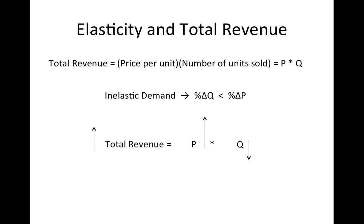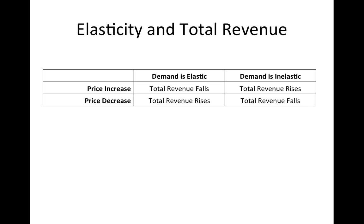Although it may seem silly, the arrow method demonstrated in these two slides can be a foolproof way to remember the relationship between elasticity and total revenue. Whichever variable changes by more will tell you whether the price increase or quantity decrease dominates, and whether total revenue will rise or fall. This table summarizes the effect of a price increase or decrease on a firm's revenue for elastic and inelastic demands. Remember that if you have trouble remembering the information in this table, you can always use the arrow method to determine the effect of a price change on a firm's revenues.